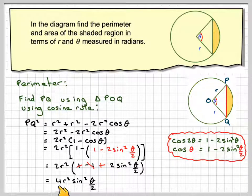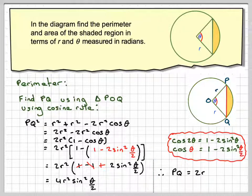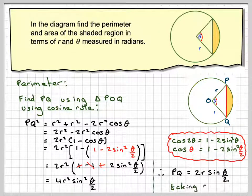Now we've got all squares here: 4R squared sine squared, which now means we could actually find PQ by taking the square root. So taking the square root of 4, we get 2. The square root of R squared, we get R. The square root of sine squared theta over 2, we get sine theta over 2.